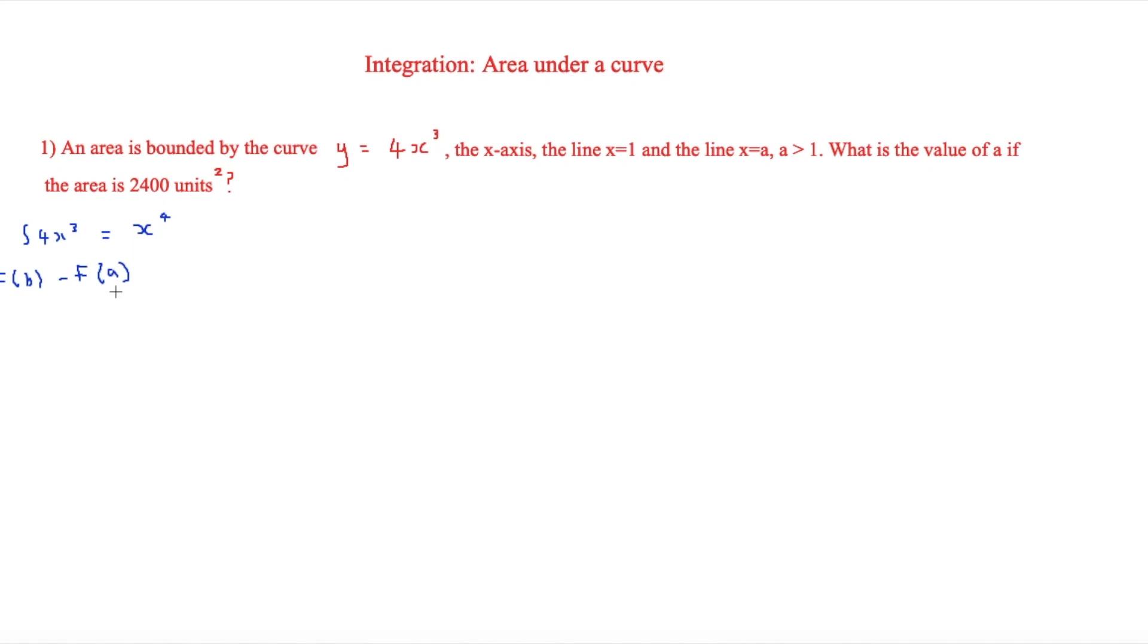So if we substitute a in for x, then we get a to the 4. So if you substitute 1 in for x, then we simply get 1. And we know that this is going to be equal to 2,400, because we know that this is what we're trying to find here is the area, and that is the way you find the area, and we've already been told the area in the question.